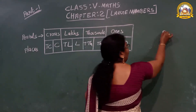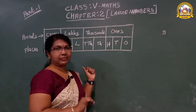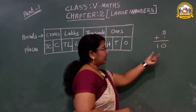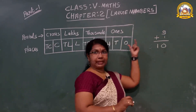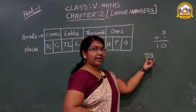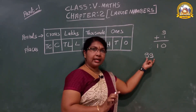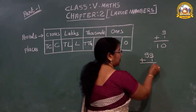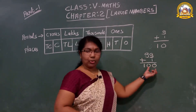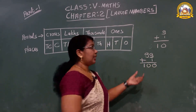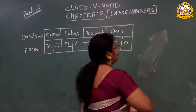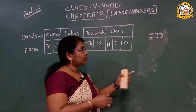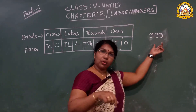This is the largest 1-digit number — 9. If you add 1 to this number, 9 plus 1, we get 10. 10 is the smallest 2-digit number. 99 is the largest 2-digit number. If you add 1 to this, you get the smallest 3-digit number: 100. Similarly, 999 is the largest 3-digit number — add 1 and you get the smallest 4-digit number.